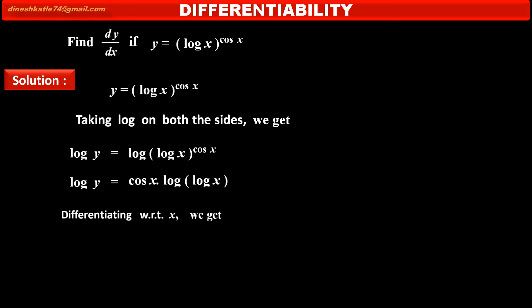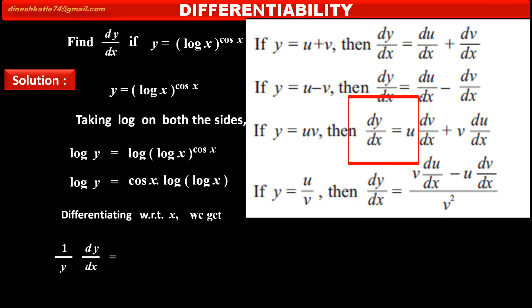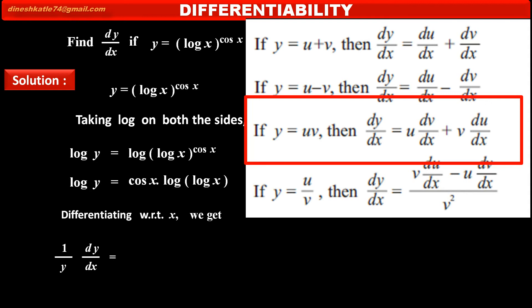Now, differentiating with respect to x, we get on the left hand side: the derivative of log y is (1/y) · (dy/dx). On the right hand side, we have to use the product rule to find the derivative, where cos x is u and log(log x) is v.